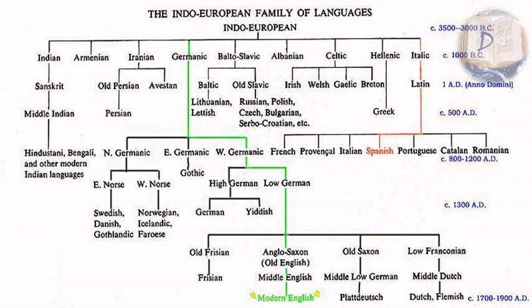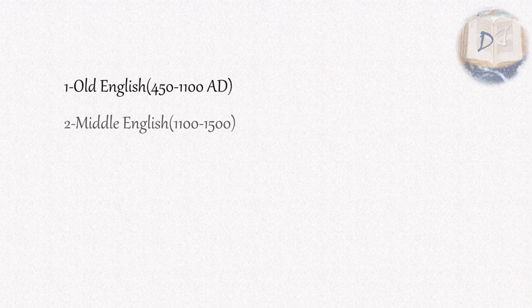Traditionally, we can divide English into three main categories: Old English, Middle English, and Modern English.